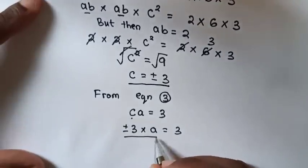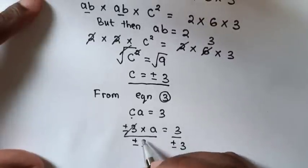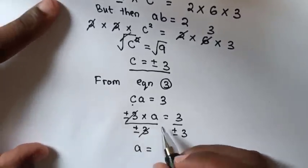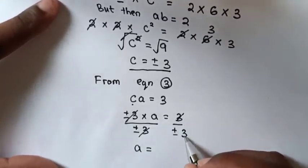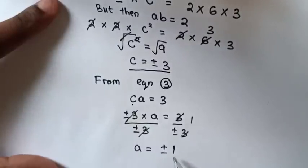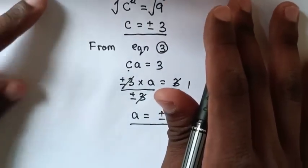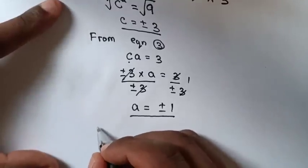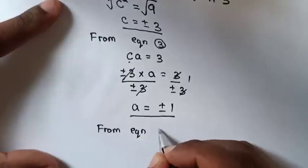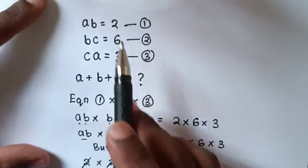We divide both sides by plus or minus 3, so those cancel, and A equals 3 divided by 3, which gives A equals plus or minus 1. To find the value of B, we use equation 1, which is AB equals 2.